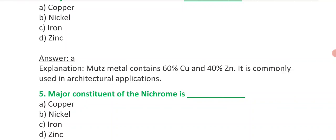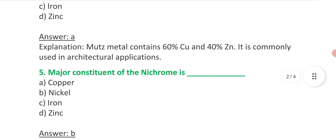Fifth question is: major constituent of the nichrome is - copper, nickel, iron, zinc. And answer is nickel.